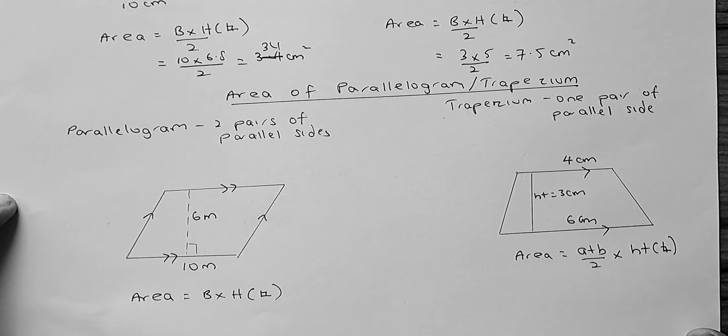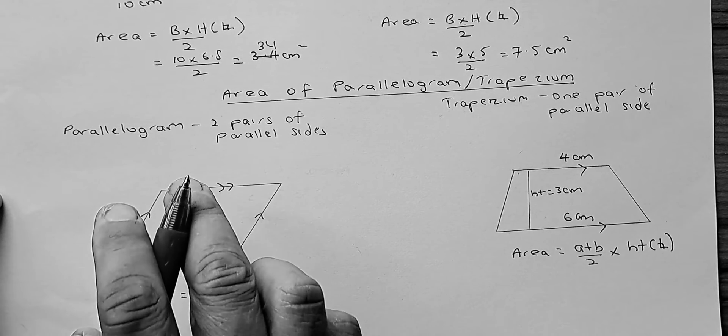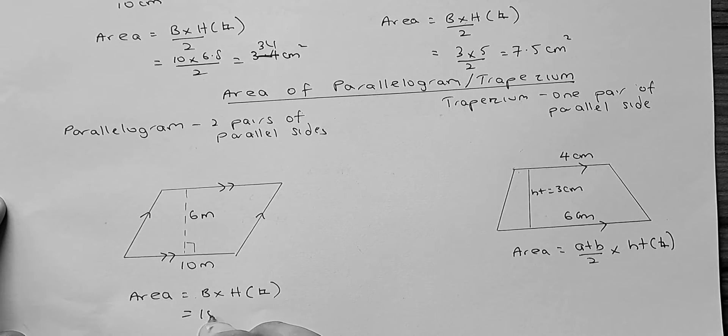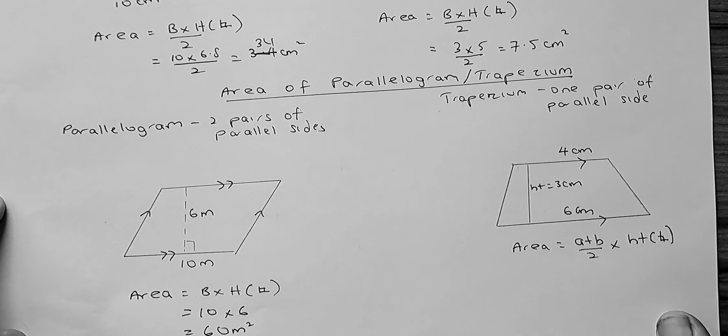So, we shall look at the area of a parallelogram. The area of a parallelogram is simple, base times perpendicular height. If the base is 10, so the base is 10 and the height is 6, so 6 times 10 is going to be 60 m squared.